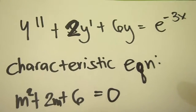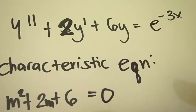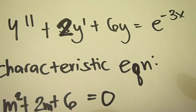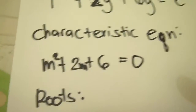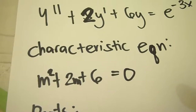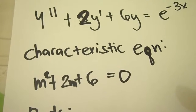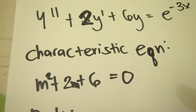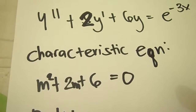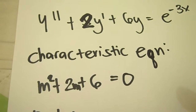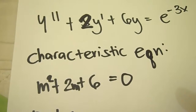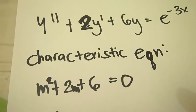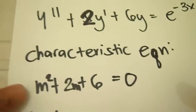I'm going to show you how to solve the equation y double prime plus 2y prime plus 6y equals e to the negative 3x. First, we're going to make its characteristic equation, which is m squared plus 2m plus 6 equals 0. We change y double prime to m squared, 2y prime to 2m, and 6y to 6, which gives us this form.